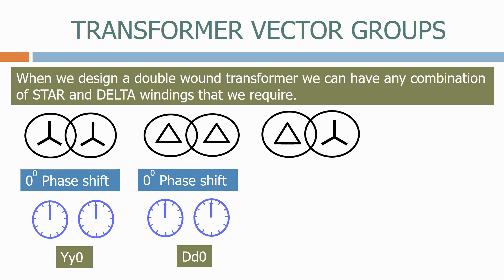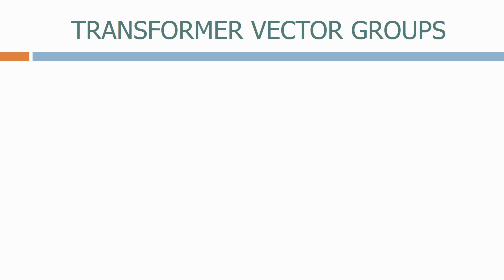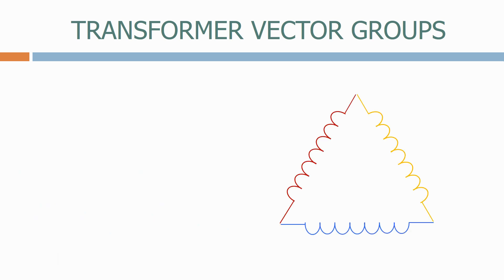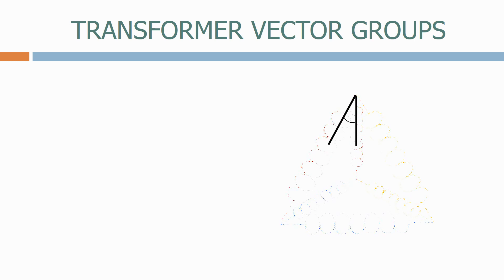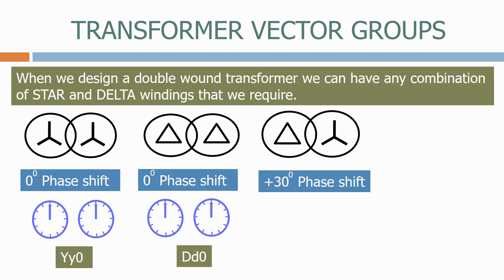Let's now look at a delta-star transformer. Because of the physical arrangement of a delta-star transformer and the way the vectors are arranged, we naturally get a plus 30-degrees phase shift from the primary to the secondary winding, as shown on this diagram. If we show the delta winding, then superimpose the star winding over the top and measure the phase angle, we'll see the difference is 30 degrees. Therefore, on the clock faces, the secondary winding is shown at 11 o'clock. This is represented in the symbol as Dy11.